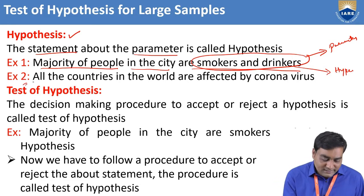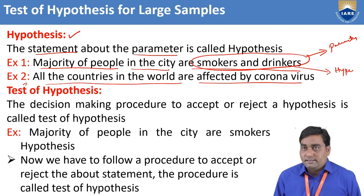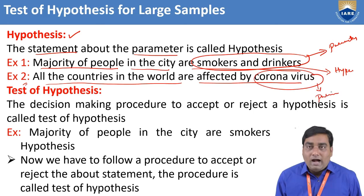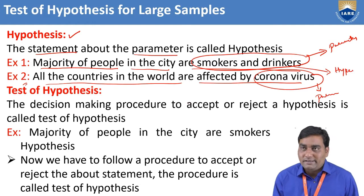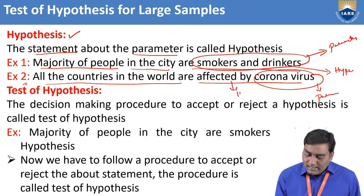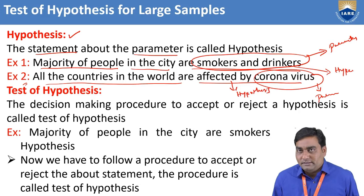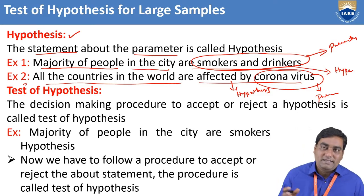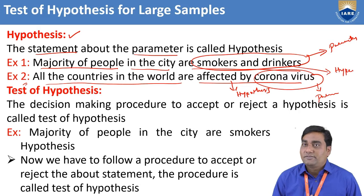Another example: all the countries in the world are affected by coronavirus. Here, coronavirus is a particular parameter, and I passed a statement about it. That's why this statement is also known as hypothesis. So to conclude: any type of statement about any type of parameter is called hypothesis. This is the first basic concept in test of hypothesis.